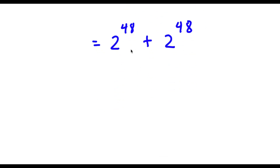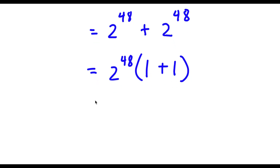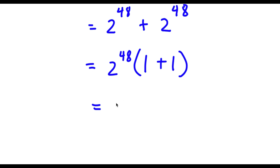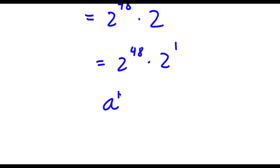From here, if I factor out 2 to the power of 48, I get 2 to the power of 48 times (1 plus 1), because 2 to the power of 48 divided by 2 to the power of 48 is 1. Now 1 plus 1 equals 2, so I have 2 to the power of 48 times 2. Now 2 here is the same thing as 2 to the power of 1, and if I have a to the power of m times a to the power of n, this equals a to the power of m plus n.